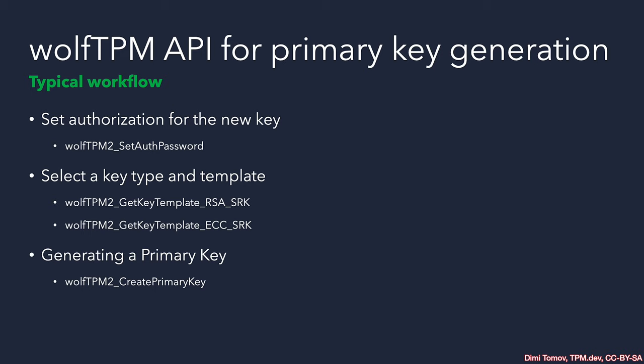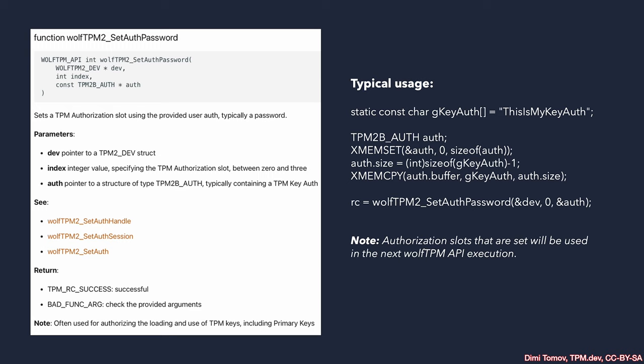The key template is where the seed goes and where we specify different properties of the key. Finally, we use the WolfTPM wrapper for creating a primary key — everything prepared in the previous two steps, the authorization slot and the key template, goes into this function. There are three authorization slots for each command. Usually we may have one for the primary key, one for the child key, and the last one for an HMAC session or parameter encryption. Often we need only one of these, and assuming we always have an HMAC session, the second one will be taken by default.